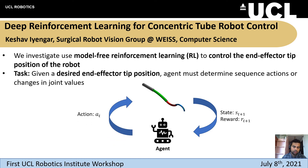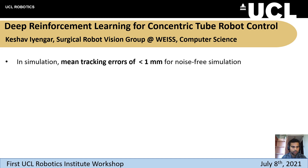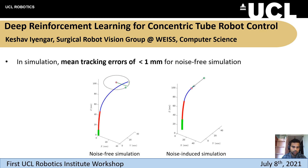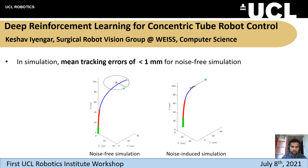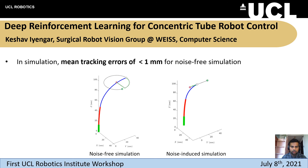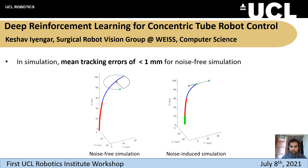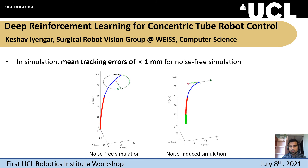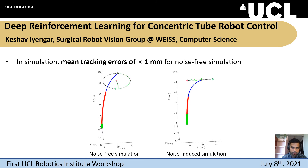Our task is for the agent to be given a desired end effector tip position. The agent must determine a sequence of actions or changes in joint values to reach this position. In simulation, we are able to reach less than one millimeter error for a noise-free simulation.